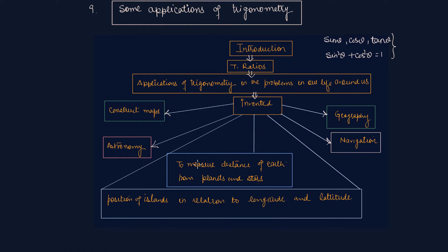Trigonometry is very useful to measure the distance of Earth from the planets, and the distances between the stars as well. It is also extremely useful to find the position of islands in relation to longitude and latitudes.